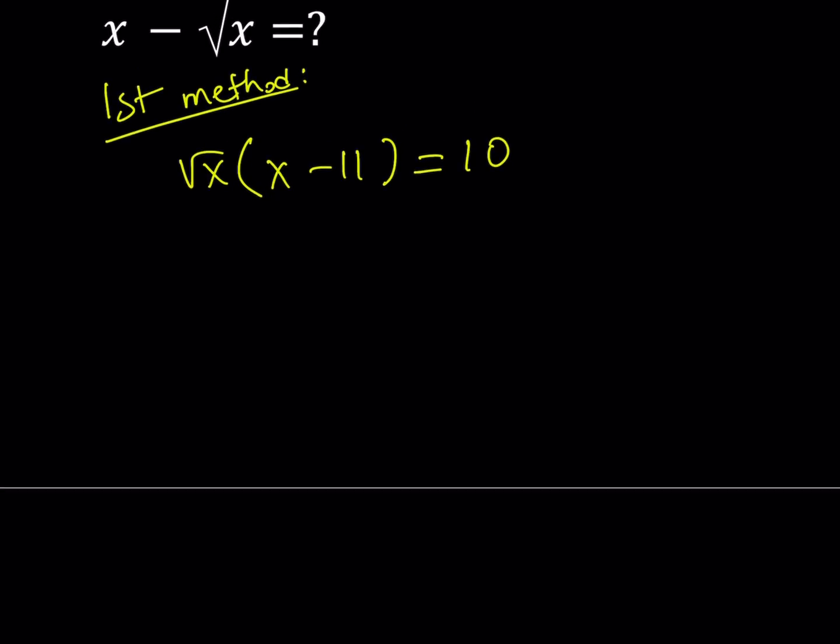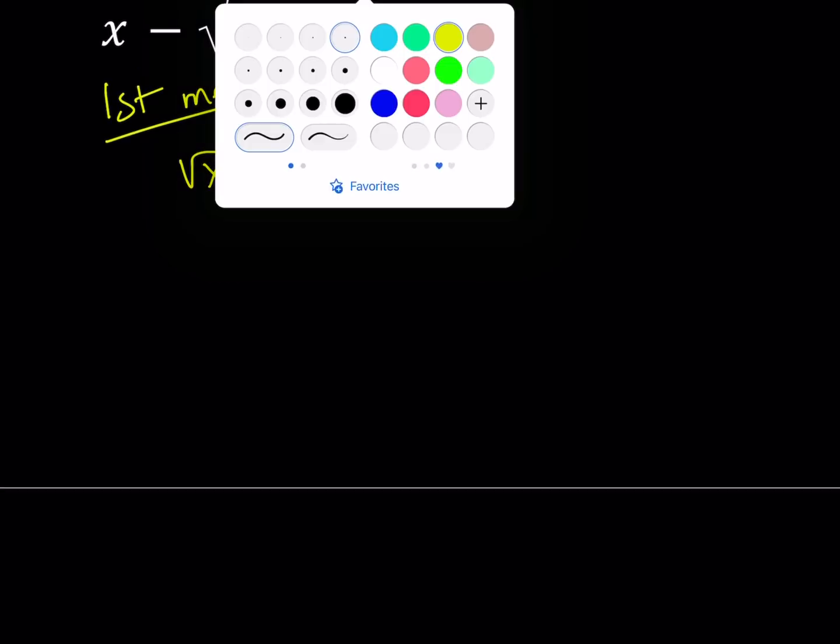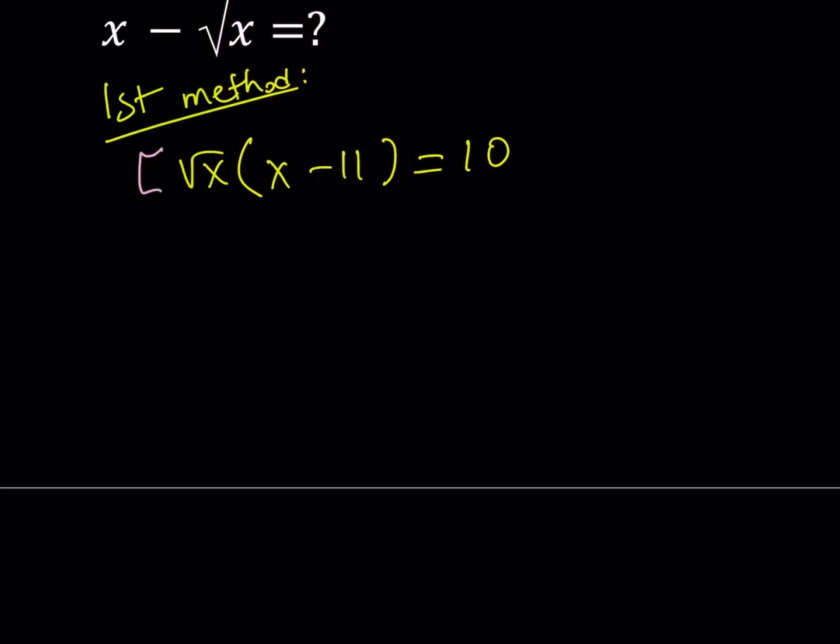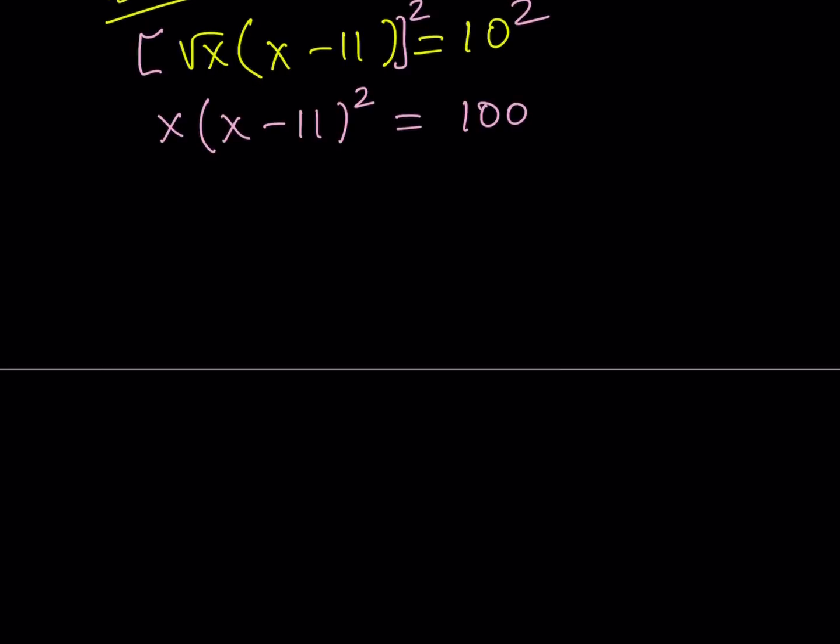So let's go ahead and square both sides at this point. And this is a product, so the square of that is going to be the product of squares, which is x times (x minus 11) squared and 10 times 10 equals 100.